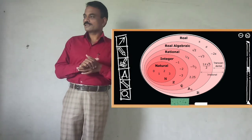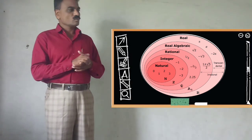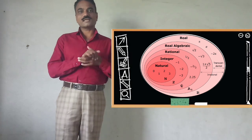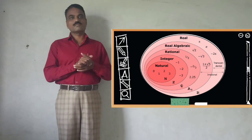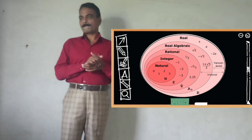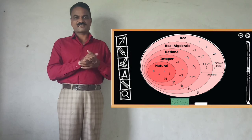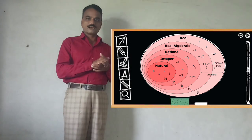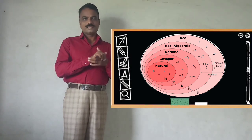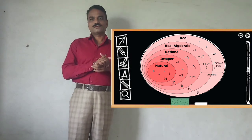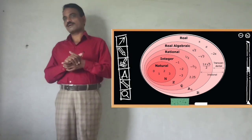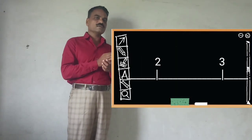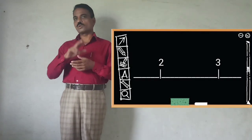In this chapter, first we will study rational numbers. What is a rational number? A number which is expressed in the form M upon N is called a rational number. In any two rational numbers — for example, if we consider two rational numbers, two and three —